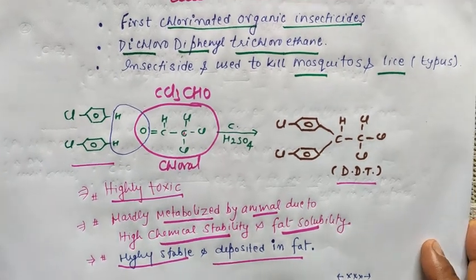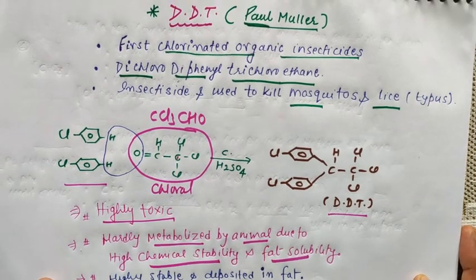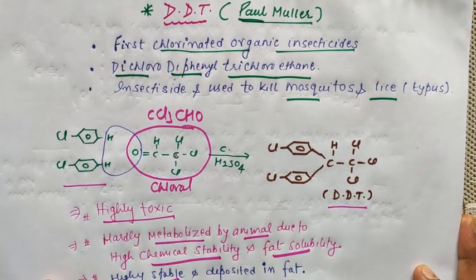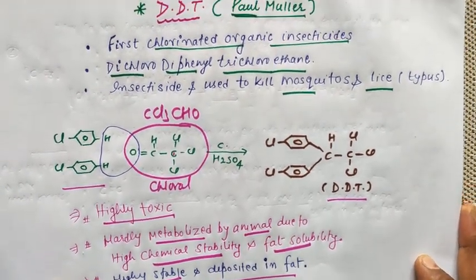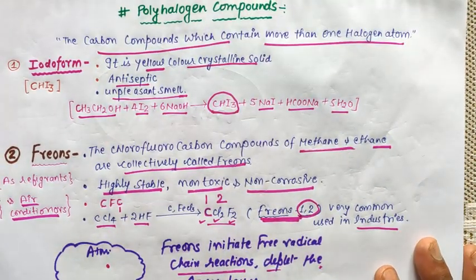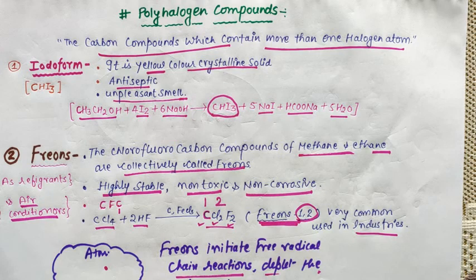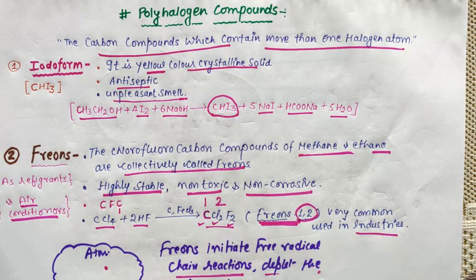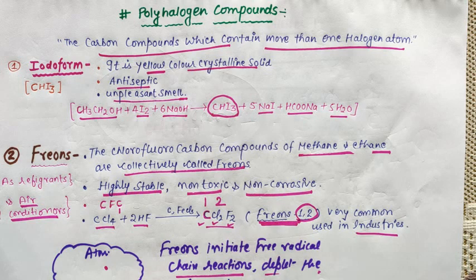I think you should revise and note these three compounds. Just consult your NCERT book. This was DDT, iodoform, and Freons. If you revise it, then our chapter is clear. We will see you next Monday with a new series. Till then, please revise all these things. Thank you and have a nice time.